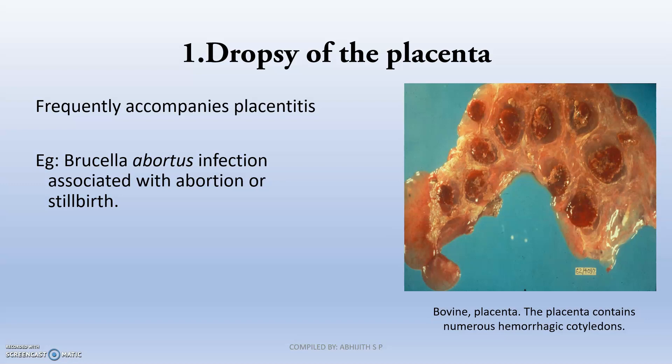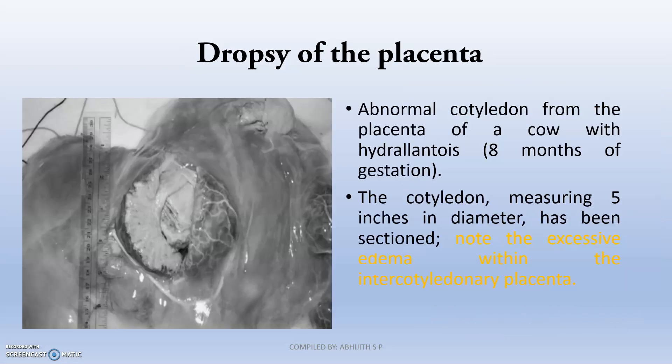Frequently accompanied with placentitis, edema builds up in the placental cotyledons and caruncles, and this feels like dropsy of placenta. The abnormal cotyledon from the placenta of a cow with hydroallantois will be measuring more than 5 inches in diameter, that is excessive edema due to accumulation of fluid.